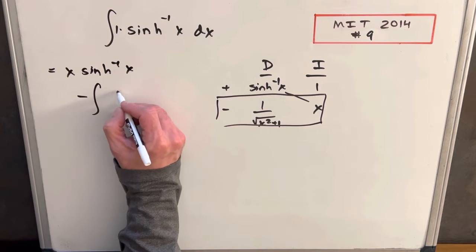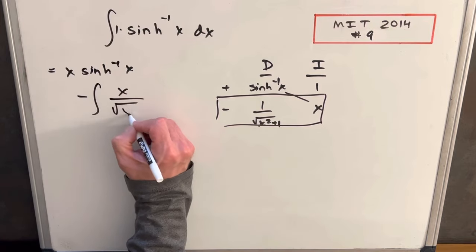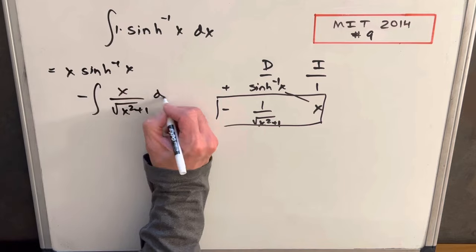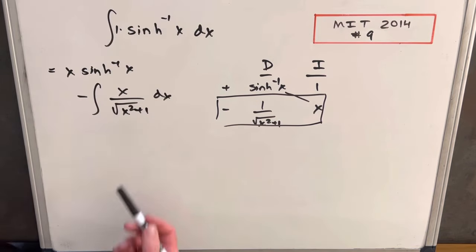This integral is going to be minus x over the square root of x squared plus one dx. This is actually not too bad. We can do a u substitution.